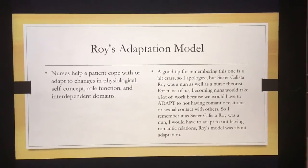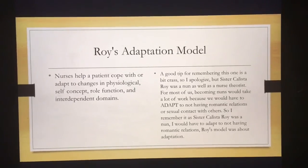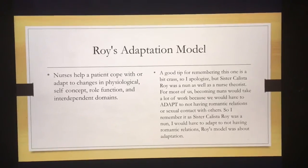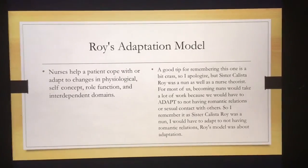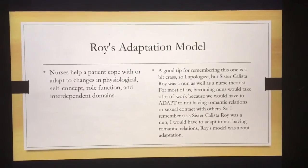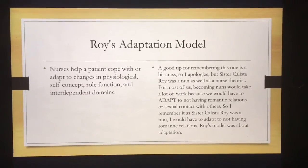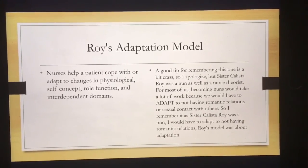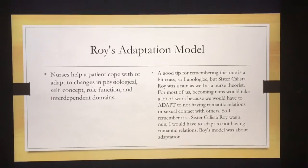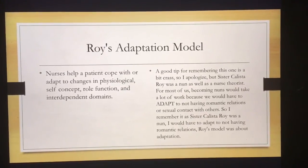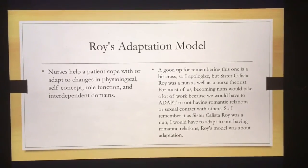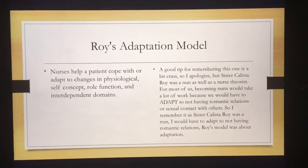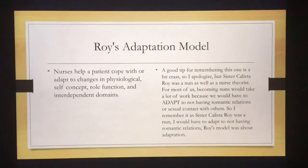Next, we have Roy's Adaptation Model, which is very simple. The nurse's role is to help a patient cope and adapt to changes going on during their illness. They may need help psychologically, physiologically, with understanding who they are now that they're ill, and how their illness will play a role in their life, what their role is in their care, and how to deal with their family. There's usually a lot of struggle because family members don't understand how to relate to the patient since they're not ill themselves. So it's really just about helping the patient adapt to their new situation.